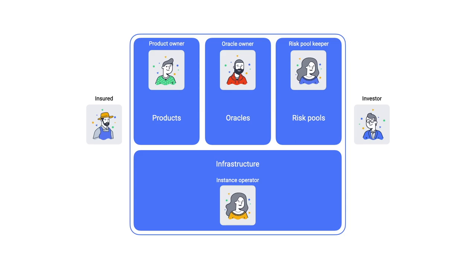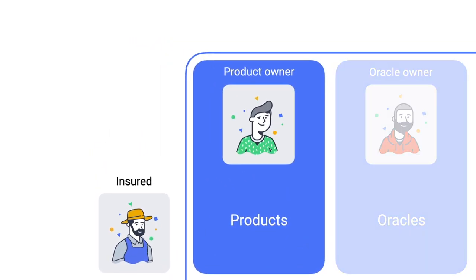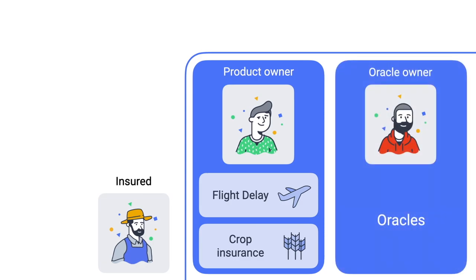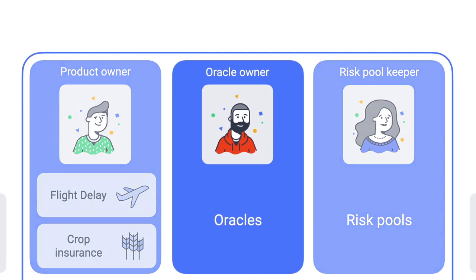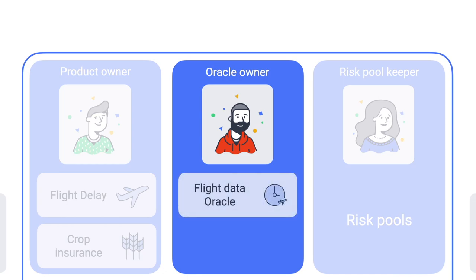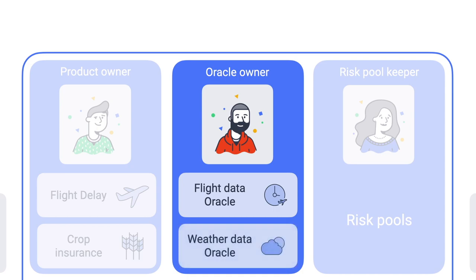To give you an overview of the stakeholder roles involved with a GIF instance, let's look at the technical role concept in detail. The insured is the policyholder who wants to pass on his risk to the risk pools. He is the customer of the insurance company and uses products designed and operated by the product owner. In the traditional insurance industry, this would be an insurance company or a managing general agent. Due to the multi-client capability, a product owner can make use of all oracles located on the respective platform by the oracle owners.